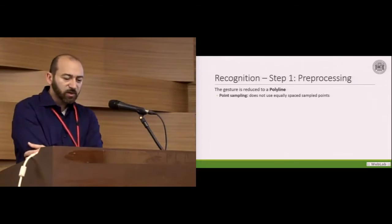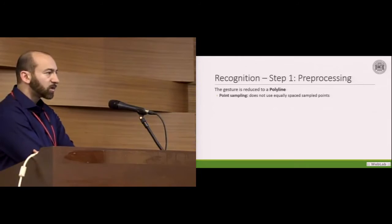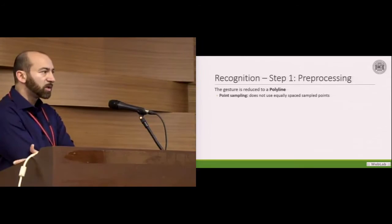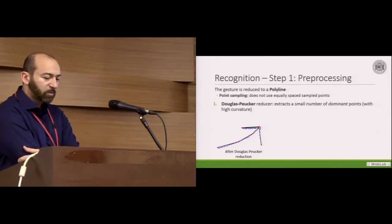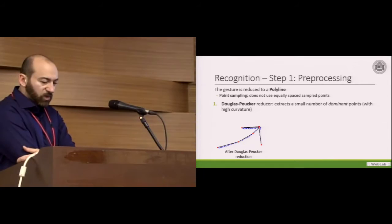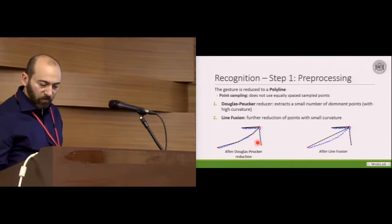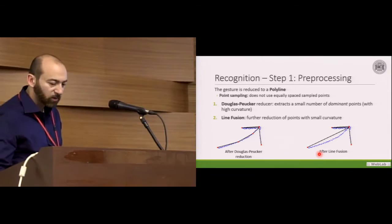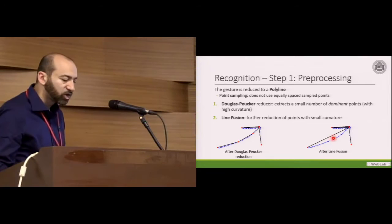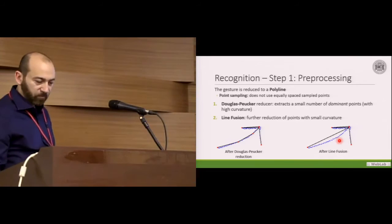In the pre-processing step, the gesture is reduced to a polyline. Differently from $1 and Protractor, our recognizer does not use equally spaced sample points. Instead, we have a reduction of the number of points in two consecutive steps: Douglas-Packer, which extracts a small number of dominant points, as we can see in this gesture we have a polyline of six segments, and then a step of line fusion in which we have a further reduction. The final polyline is only composed of four segments.